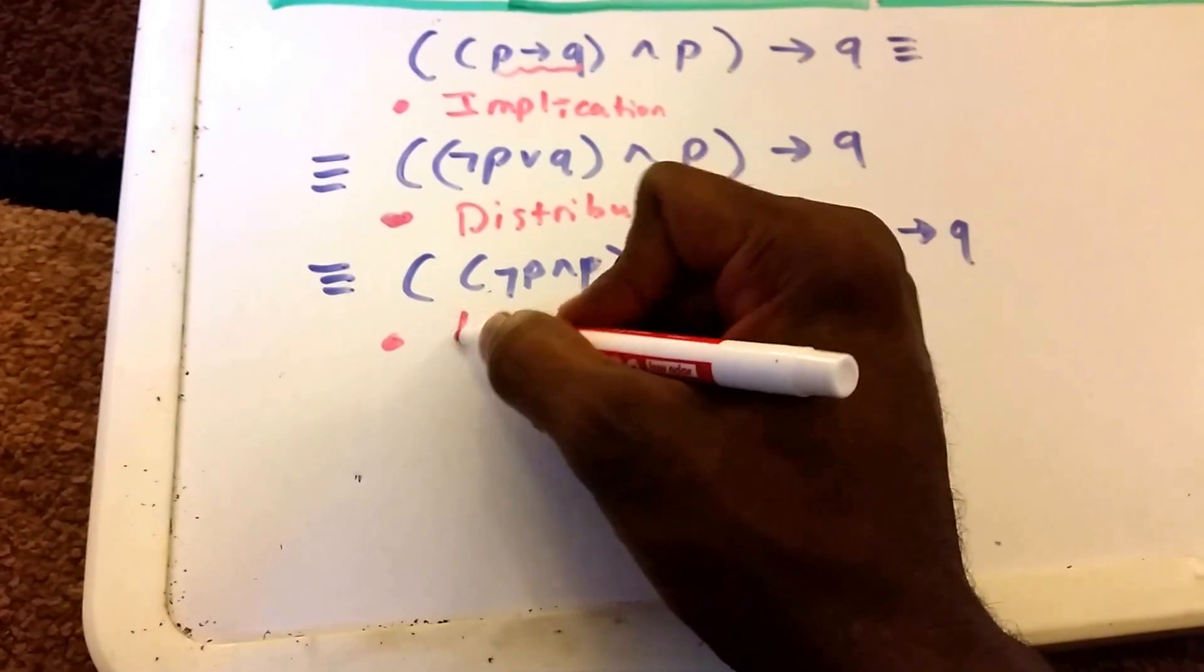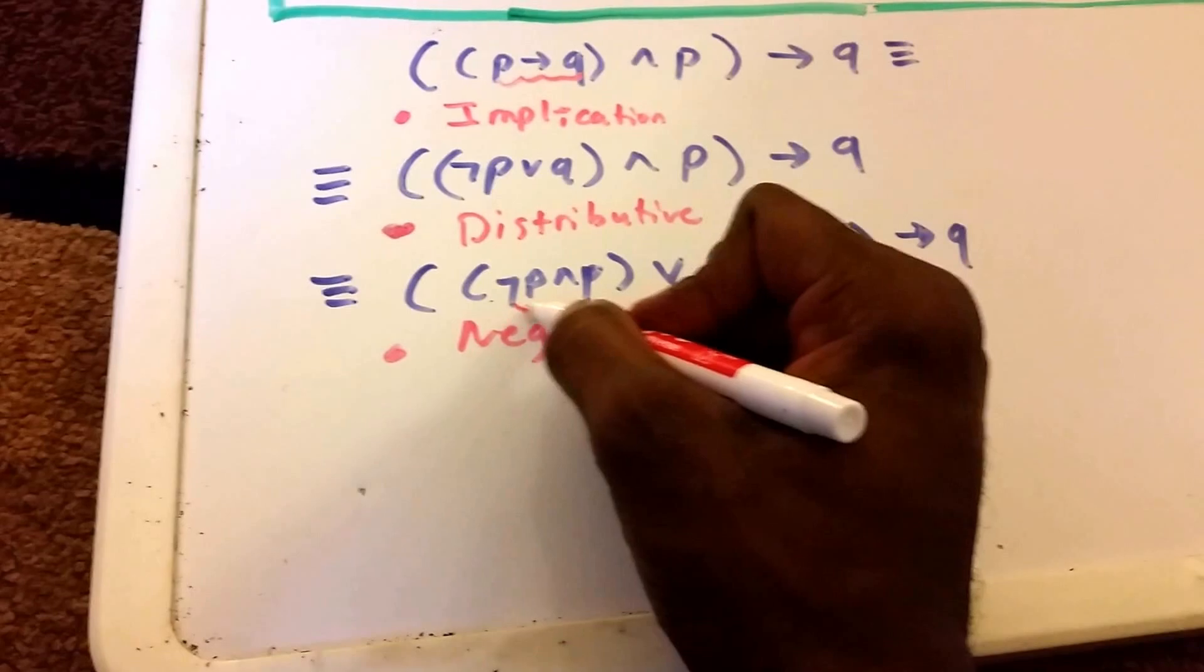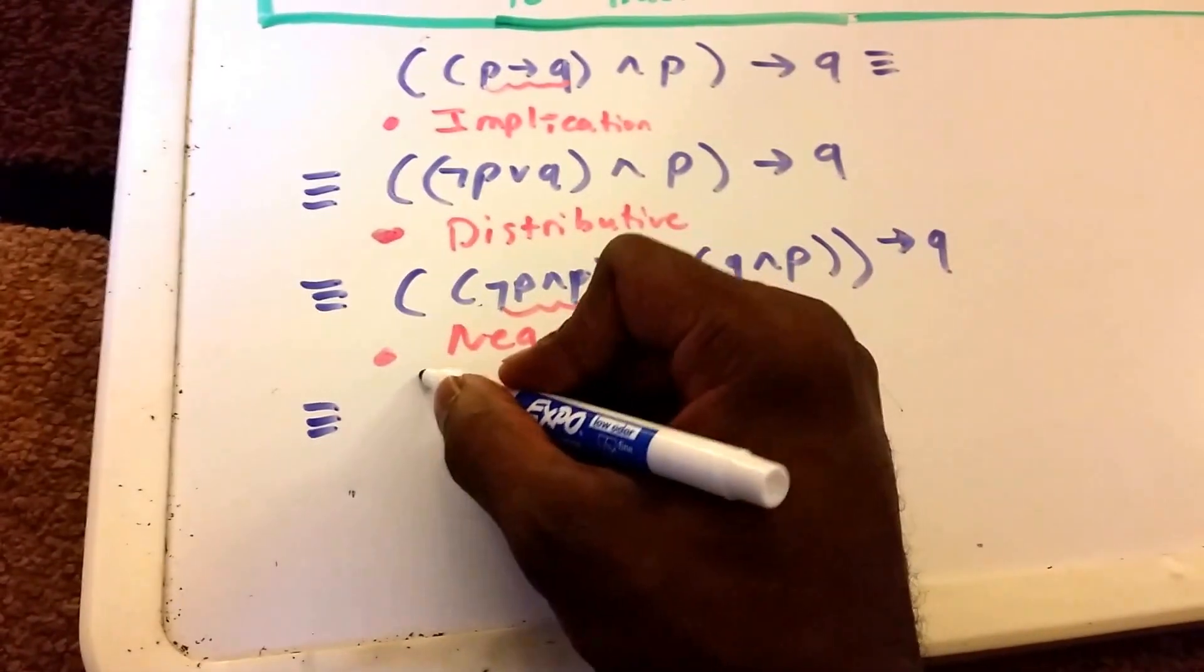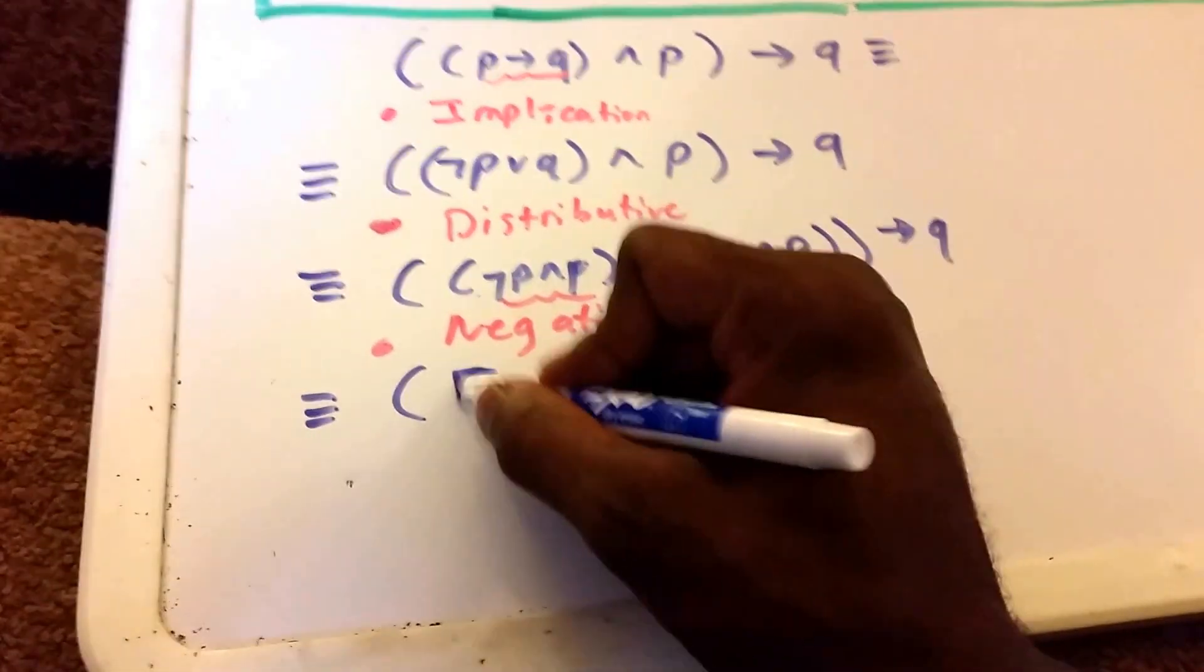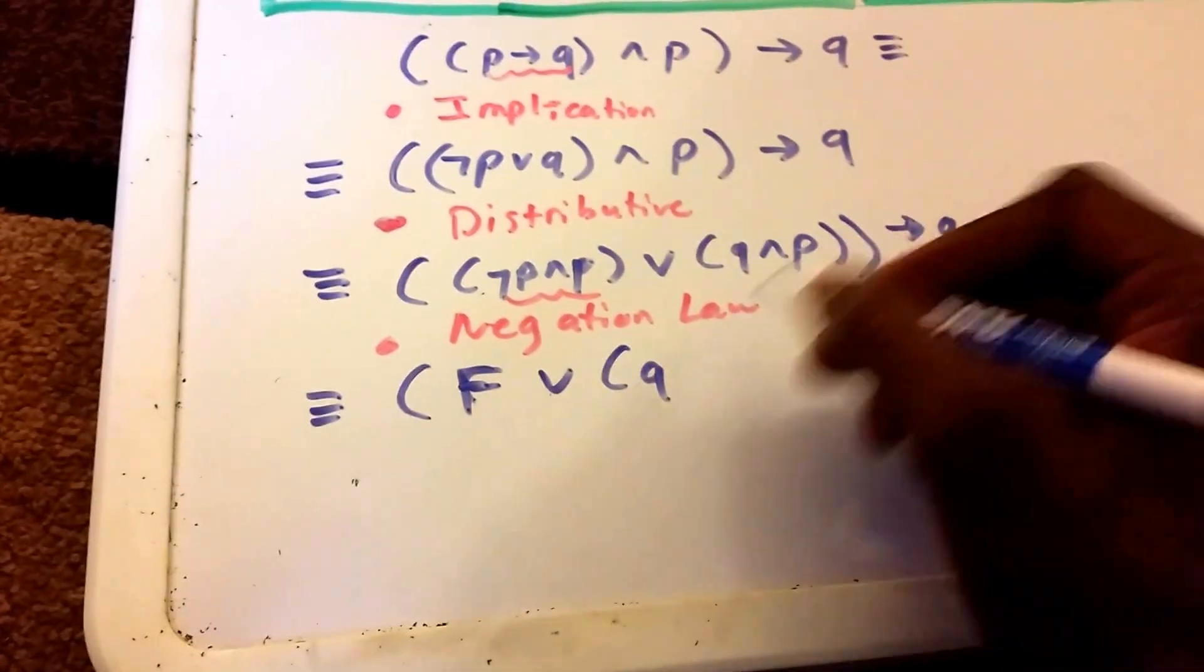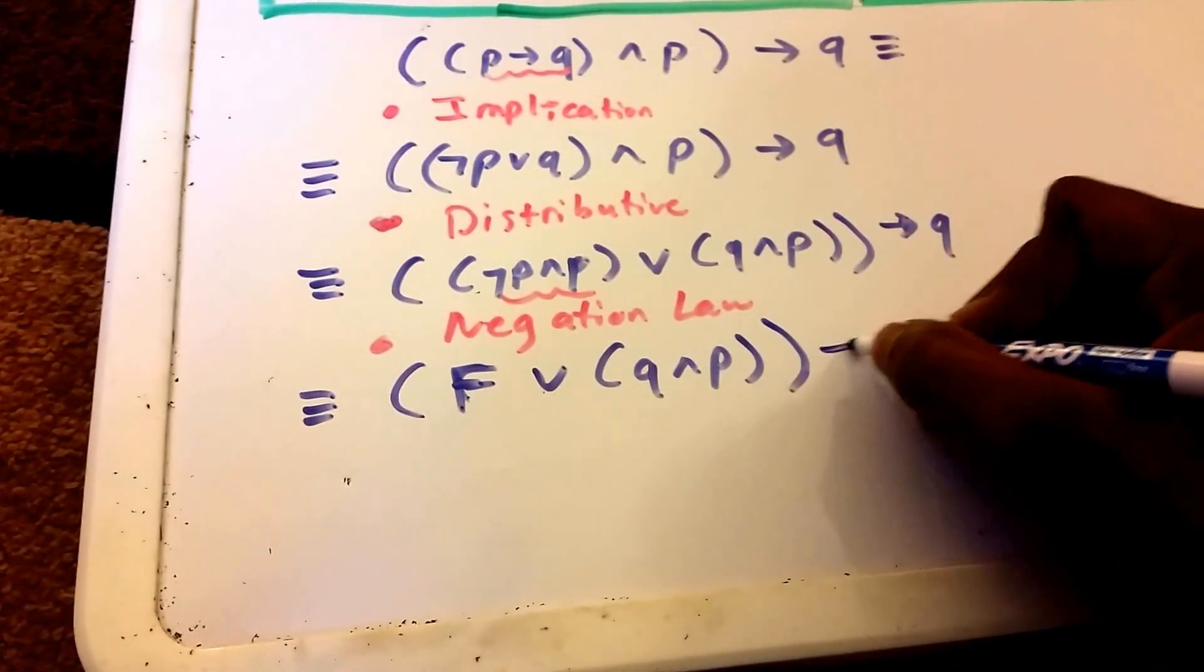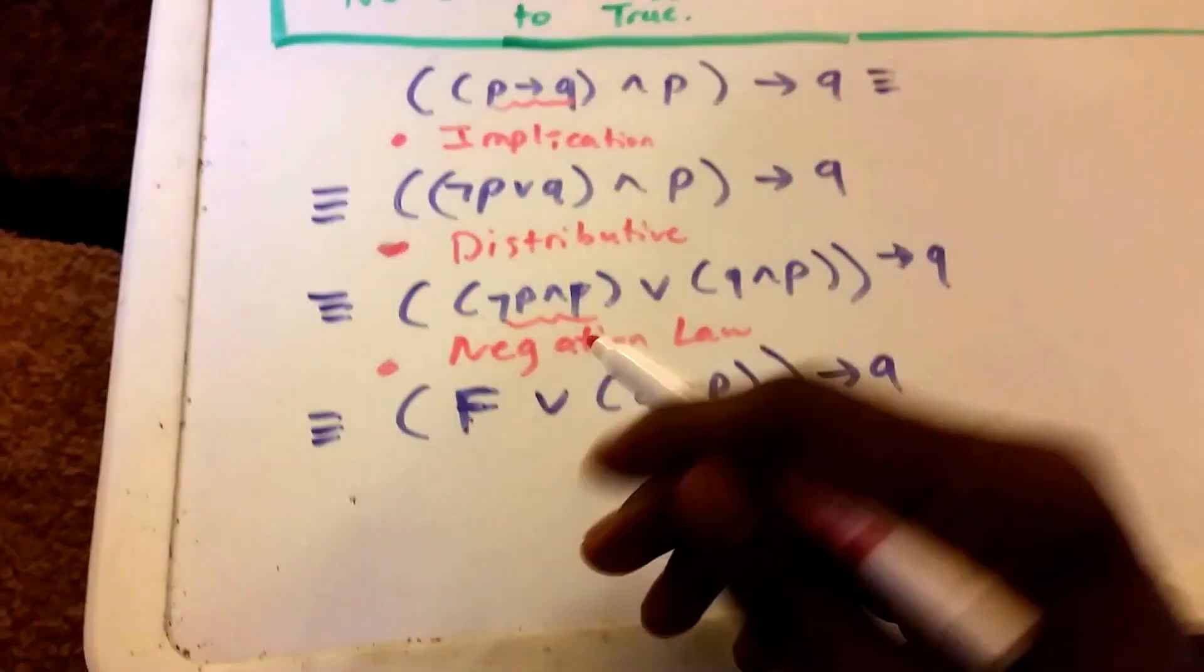So let's see. Next up, we probably want to use the negation law, and that's for this small expression there. So now what we're going to get is, not P and P, that's going to be false. I'm going to put F for false. And or Q and P, all of that in parentheses implies Q. So you can see the expression we just got rid of was here.